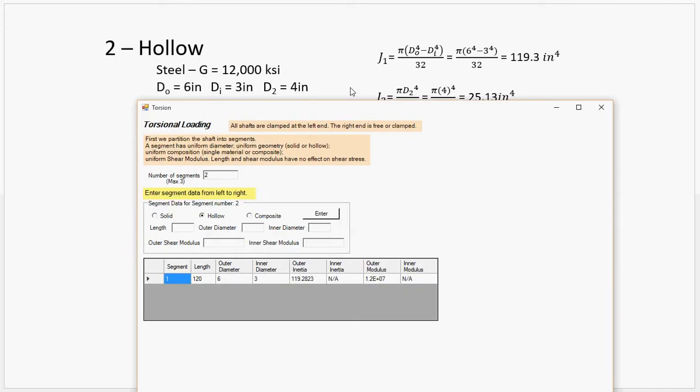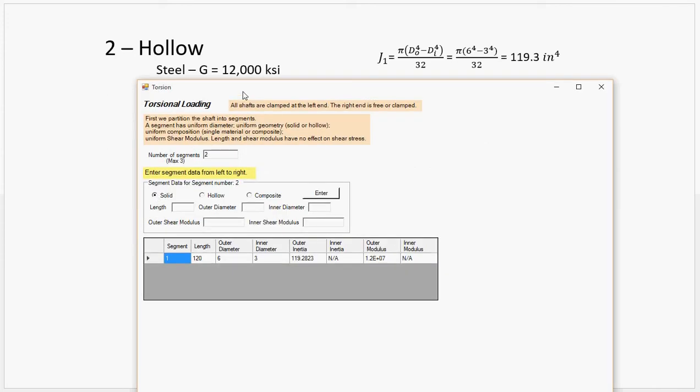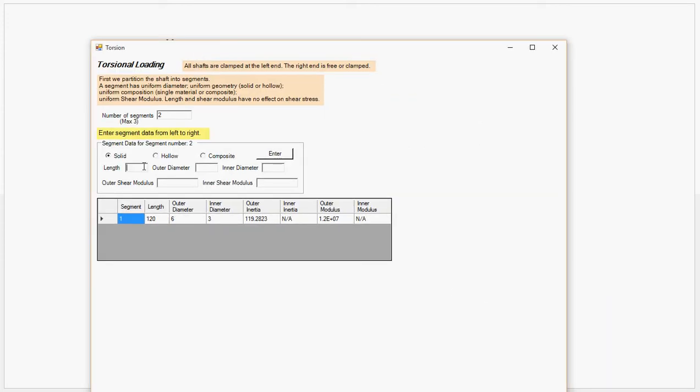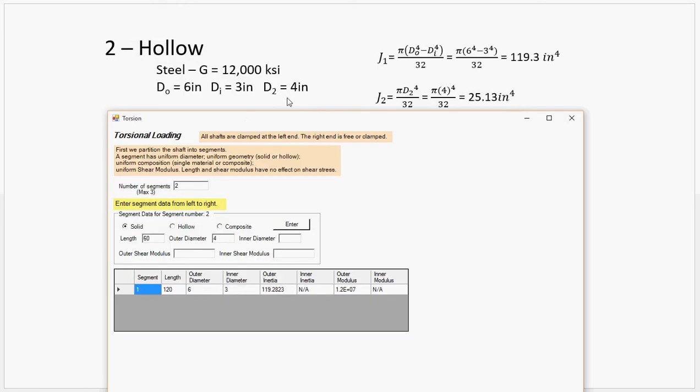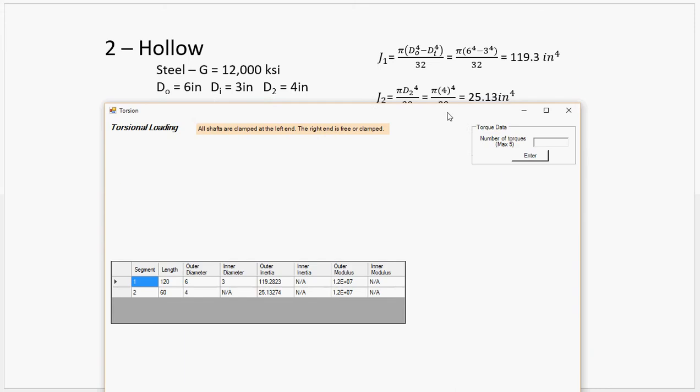Okay. So, on to segment two, the solid segment. So, that's five feet, that's 60 inches. Outer diameter is four. Same shear modulus. That should be that. Then just the standard moment of area, polar moment of area equation.